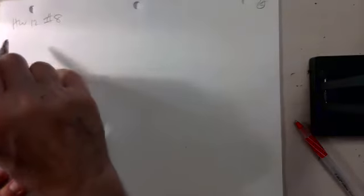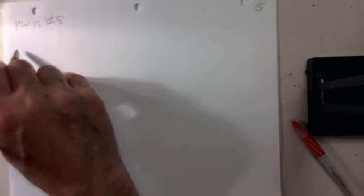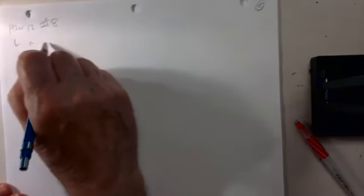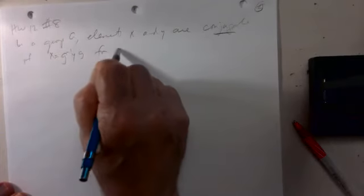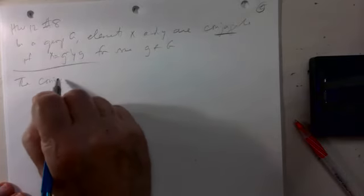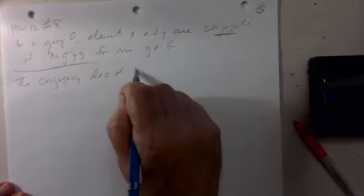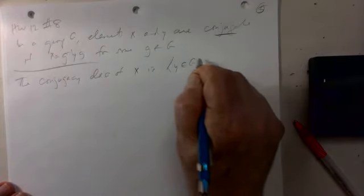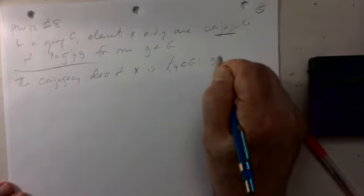Homework 12 number eight: compute the conjugacy classes. Recall that in a group G, elements x and y are conjugate if x = g⁻¹yg for some g in the group. This is an equivalence relation, and the conjugacy class of x is the set of all y in G that are conjugate to x.